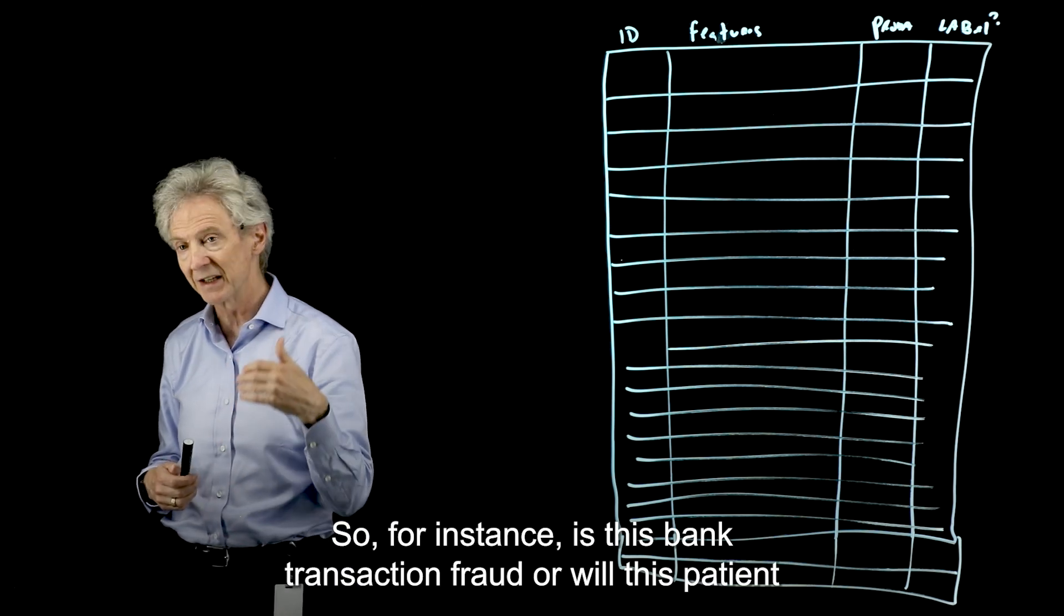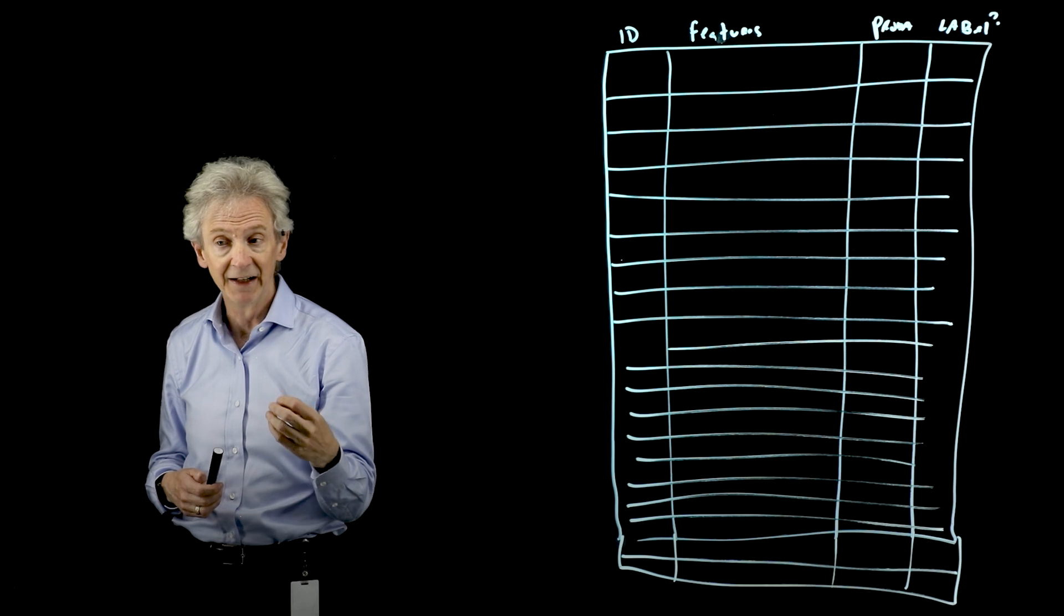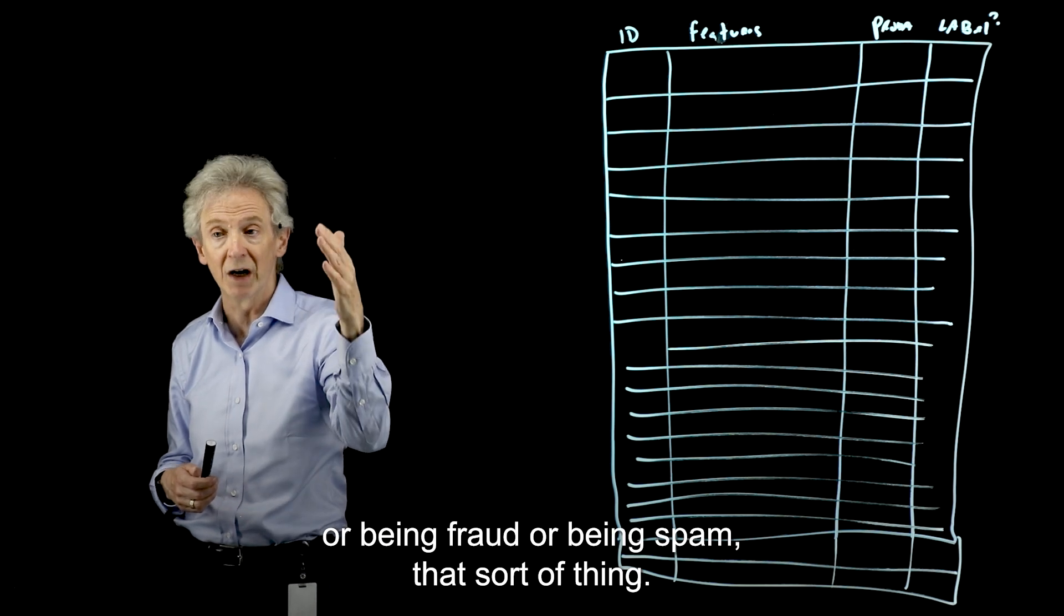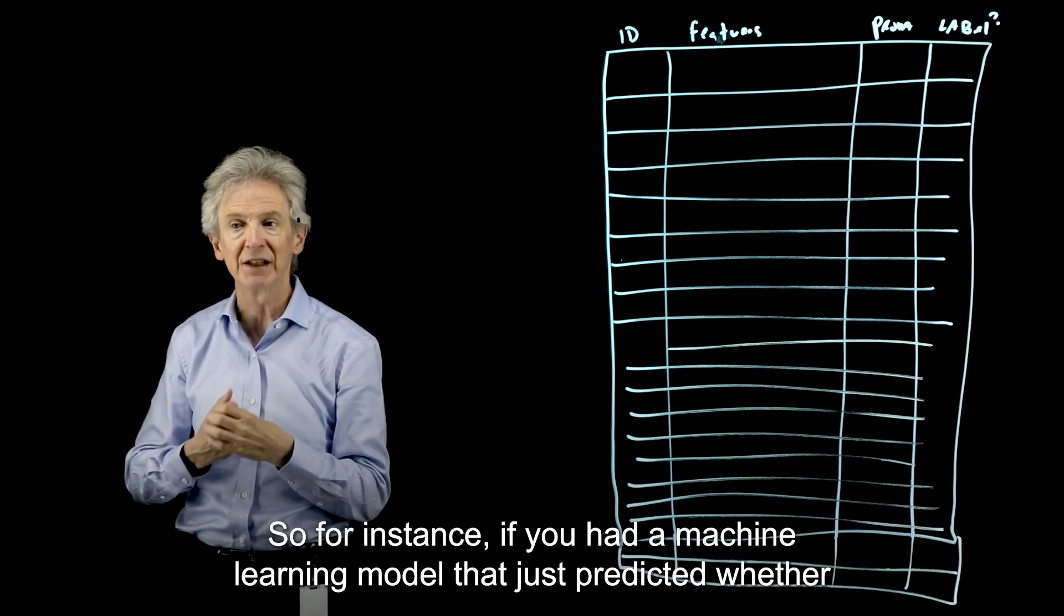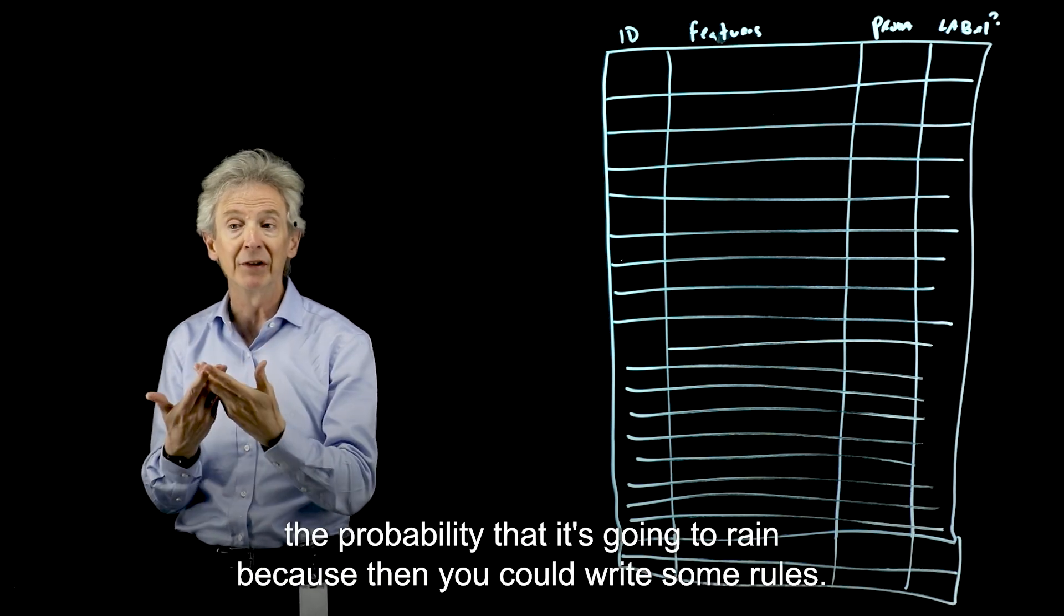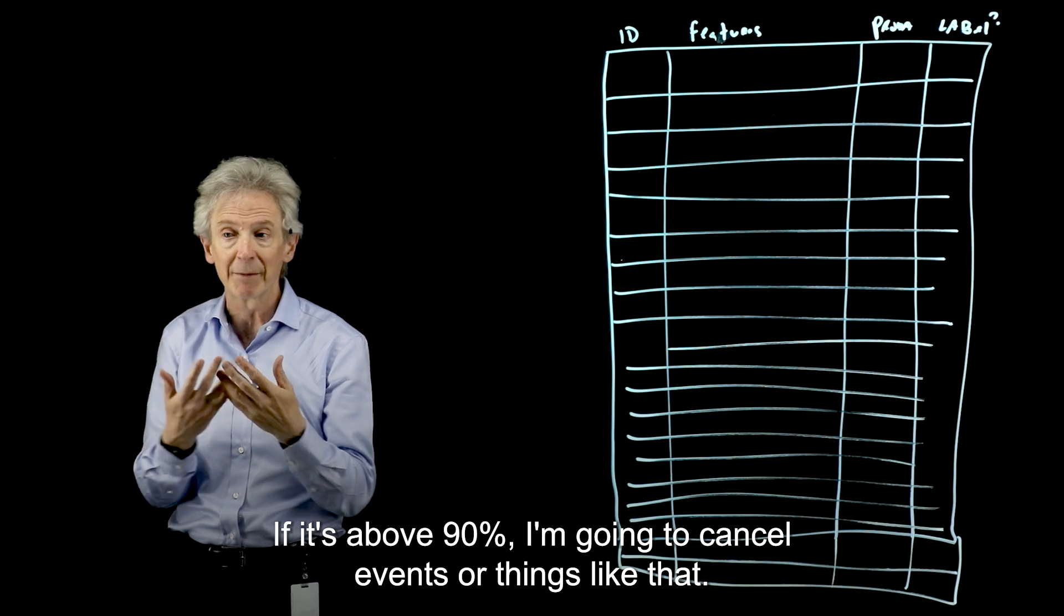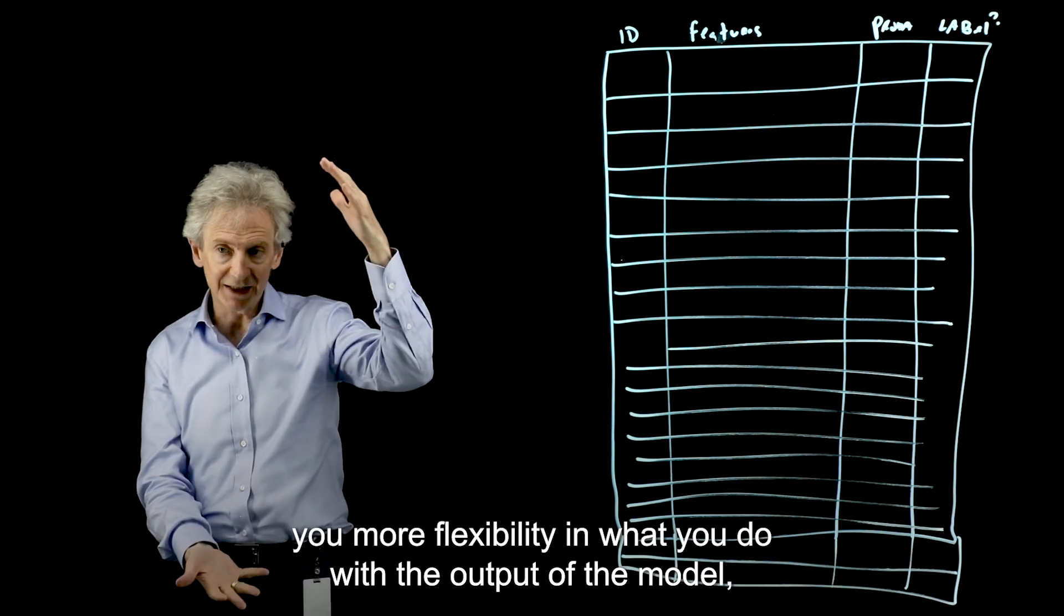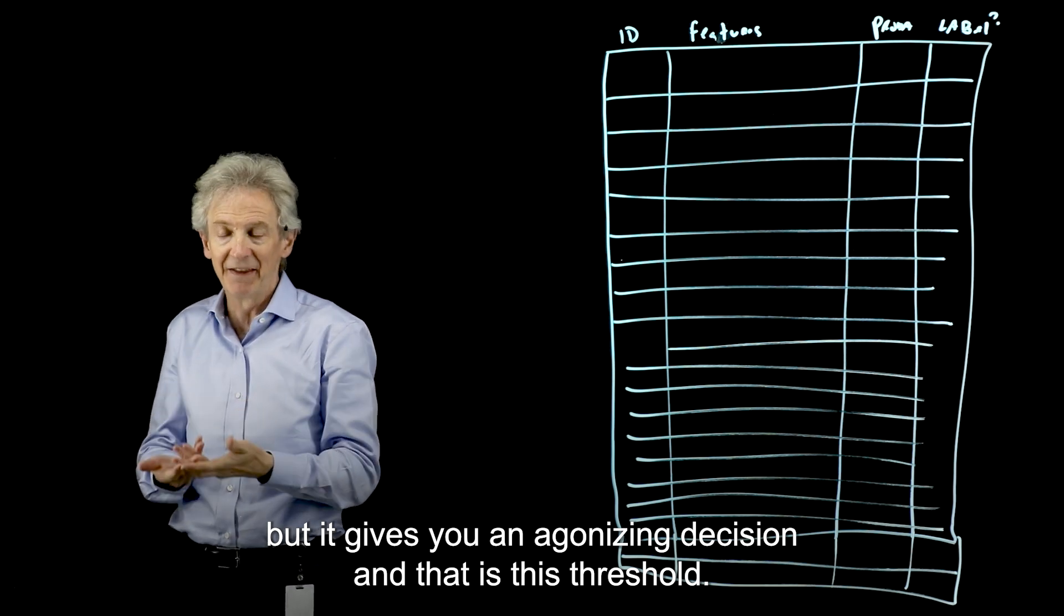So, for instance, is this bank transaction fraud? Or will this patient show up for their appointment? Or is this patient portal message urgent or not? The model's not going to say yes or no. It's going to say the probability of it being urgent or being fraud or being spam. So this creates flexibility. For instance, if you had a machine learning model that just predicted whether it was going to rain tomorrow, that's not as useful as predicting the probability that it's going to rain. Because then you could write some rules. So if it's over 80%, I'm going to bring my umbrella. If it's above 90%, I'm going to cancel events. So a probability gives you more flexibility in what you do with the output of the model.